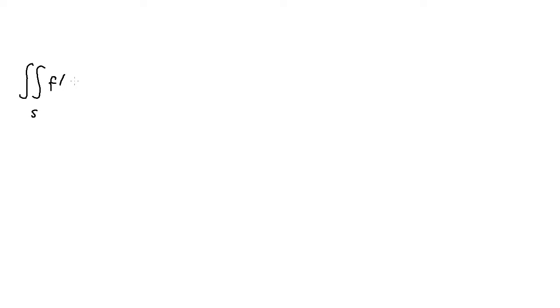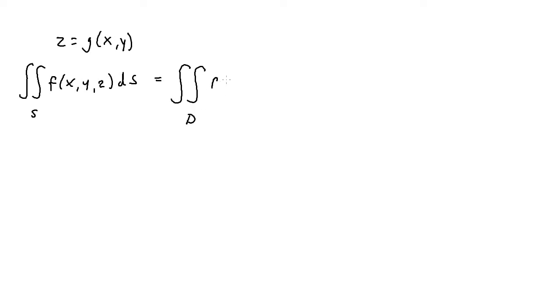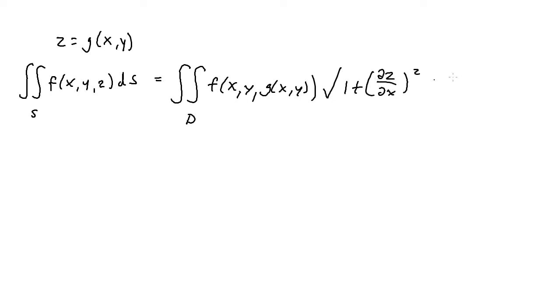Let's take a look at surface integrals. If you have the double integral over some surface S of a multivariable function f(x, y, z) times dS, and you're given that z equals some function g in terms of x and y, then the formula to evaluate this surface integral is the double integral over region D of f(x, y, g(x,y)) times the square root of 1 plus the partial derivative of z with respect to x squared plus the partial derivative of z with respect to y squared, times dA.